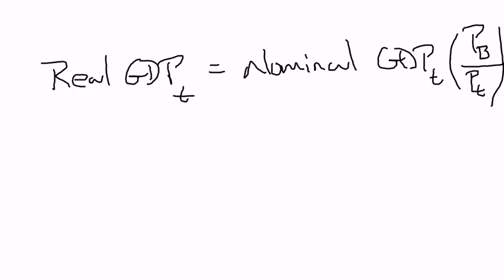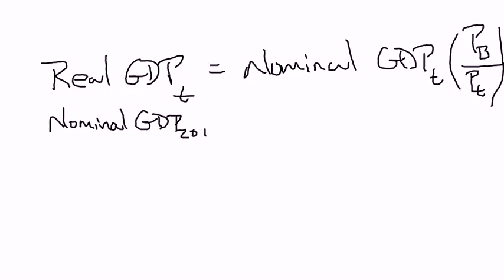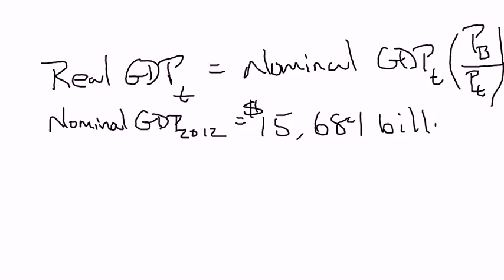Let's go ahead and do this for the United States for the year 2012. Nominal GDP in 2012 is $15,684.8 billion — that's a big number, $15,684,000,000,000. If you have thousands of billions, that basically translates into trillions, so the size of the U.S. economy in 2012 is roughly fifteen point seven trillion dollars.